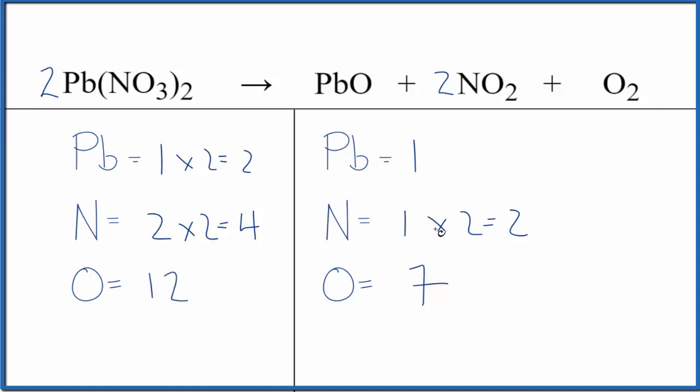It looks like if we want to balance the nitrogens, we need to change this number here to a 4. So now we have 1 times 4, 4 nitrogens. Need to update the oxygens. So we have 1 plus 2 times 4, that's 1 plus 8, that's 9, 10, 11 oxygen atoms.